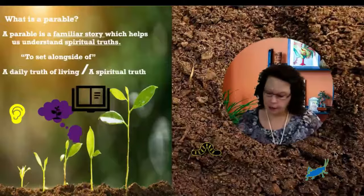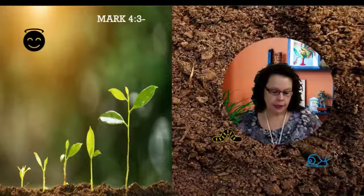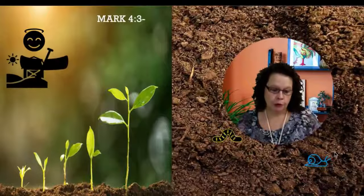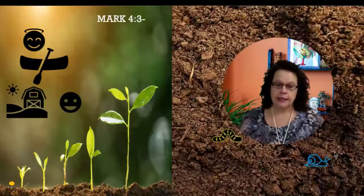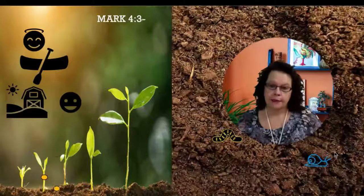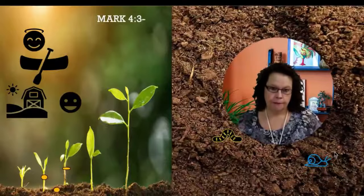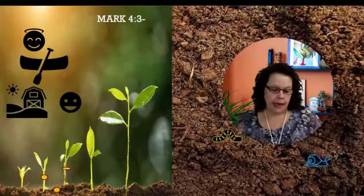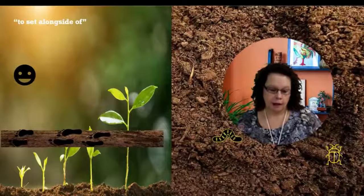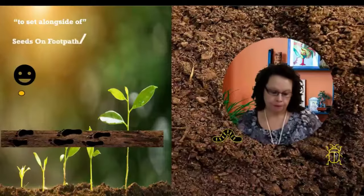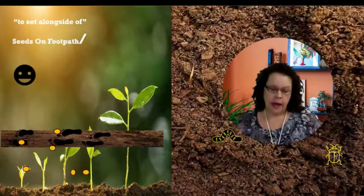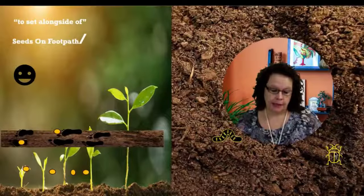Let's read the story beginning with Mark chapter 4 verse 3. Jesus says, 'Listen, a farmer went out to plant some seeds. As he scattered it across his field, some of the seed fell on a footpath, and the birds came and ate it.'